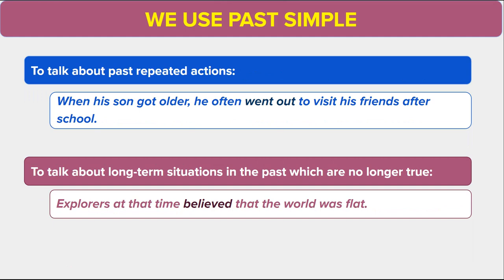We use the past simple to talk about past repeated actions. For example, when his son got older, he often went out to visit his friends after school.